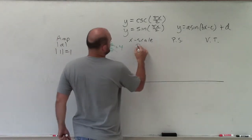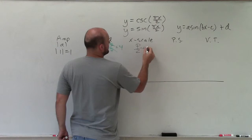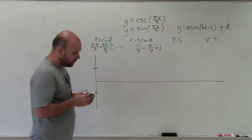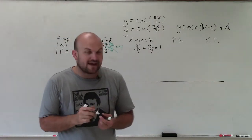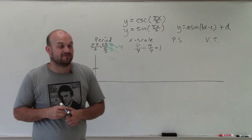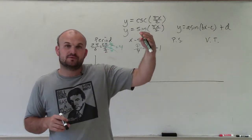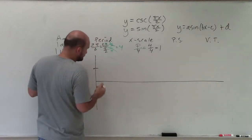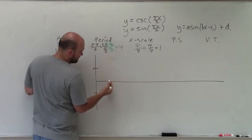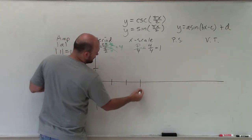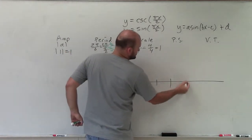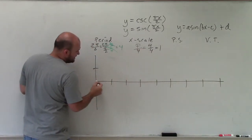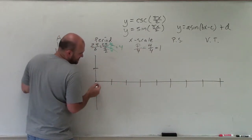The x scale is your period divided by 4. So 4 divided by 4 equals 1. That means the distance between every single important point of the sine graph — the maximum, the minimum, and the intercepts — is going to be a distance of 1. There are 4 x-scale intervals within a period, and the distance between each is 1, so from the start: 1, 2, 3, 4. That completes 1 period.